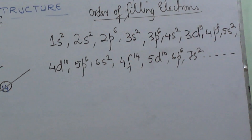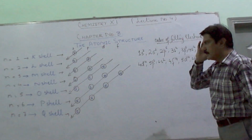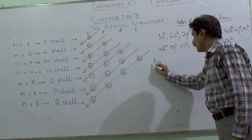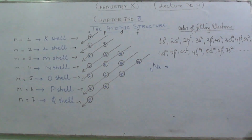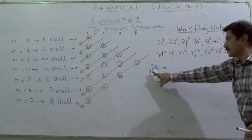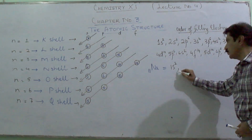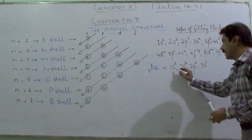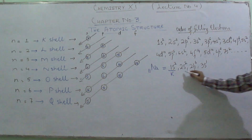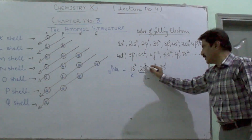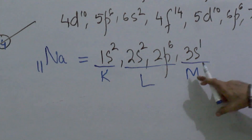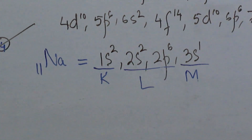Now if I give you some examples — say, you are asked to write the electronic configuration of sodium whose atomic number is 11. You must follow the Aufbau principle to distribute these 11 electrons: 1S2, 2S2, 2P6, 3S1. Here 1S2 shows that K shell is complete, 2S2 and 2P6 show that L shell contains 8 electrons and is also complete, while the last shell M contains only 1 electron in the S orbital.